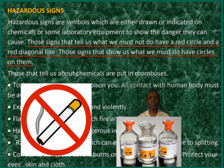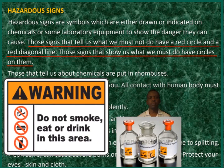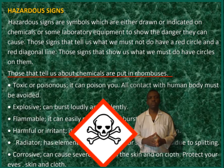Those signs that tell us what we must not do have a red circle and a diagonal line. Those signs that show us what we must do have circles on them. Those that tell us about chemicals are put in rhombuses.